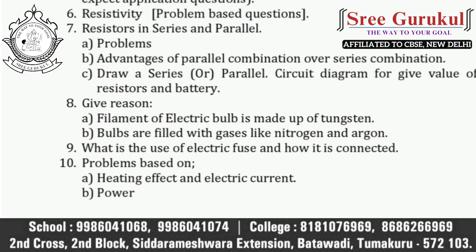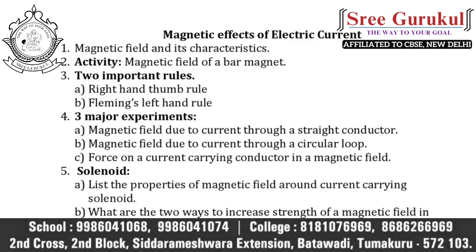Let's move on to the next chapter: magnetic effects of electric current. In this chapter, the most frequently asked question in your board exam is magnetic field and its characteristics. Second, they can raise the question on magnetic field of a bar magnet. In this chapter also, we are having two important rules: first, right hand thumb rule; second, Fleming's left hand rule. Among these, you can expect any one rule in your board exam 100%.